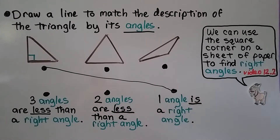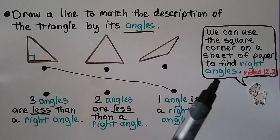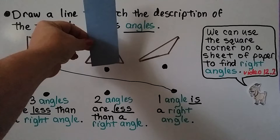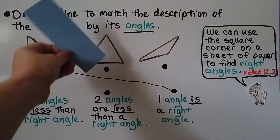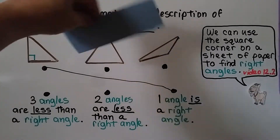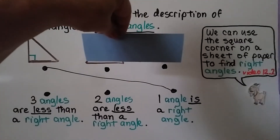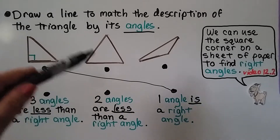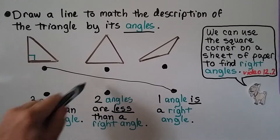We can actually use the square corner of a sheet of paper to find right angles — we learned that in lesson 12.2. We can take the square corner and see that each angle of this triangle is less than a right angle, so this triangle has three angles that are less than a right angle.